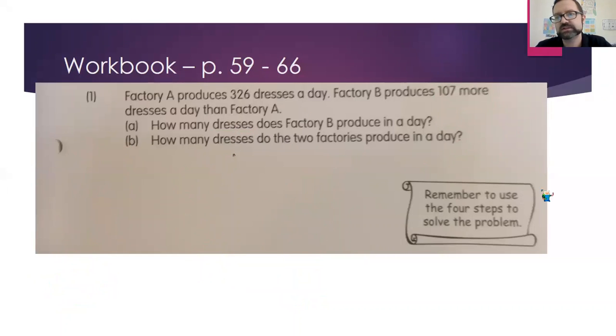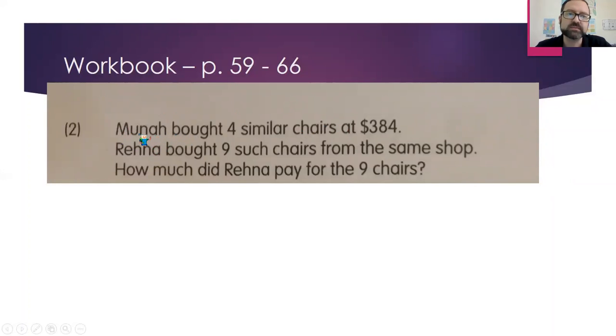Problem number two. Let's check it out. Number two: Munch or Muna, I am not sure how to pronounce that. Muna bought four similar chairs at $384. Rehna bought nine such chairs from the same shop. How much did Rehna pay for the nine chairs? All right, let's see how to do this. So what do we know from this problem? We know that four chairs cost $384. And we know that Rehna is buying the same kind of chairs here. All these chairs are the same. And we're trying to figure out how much she paid for nine chairs.